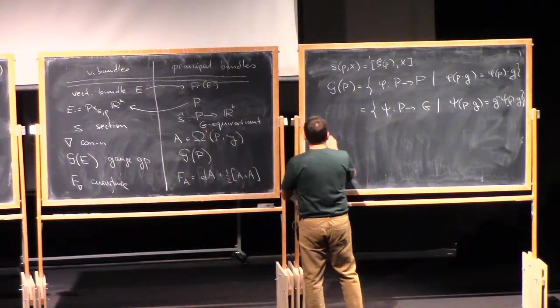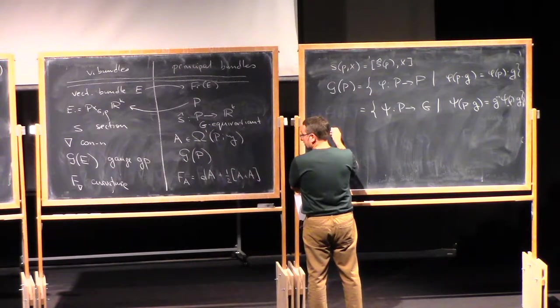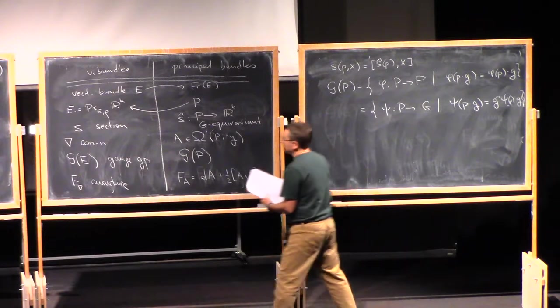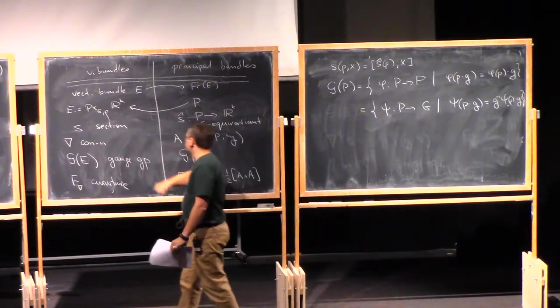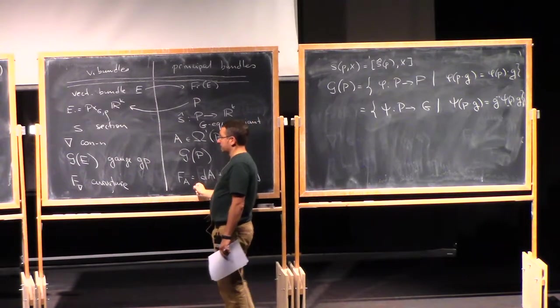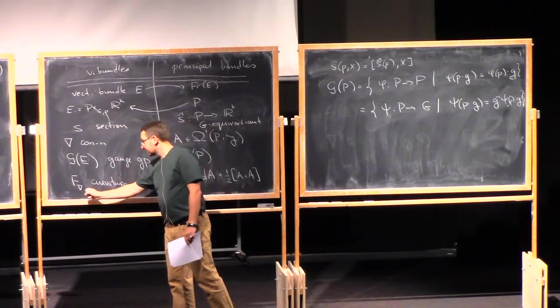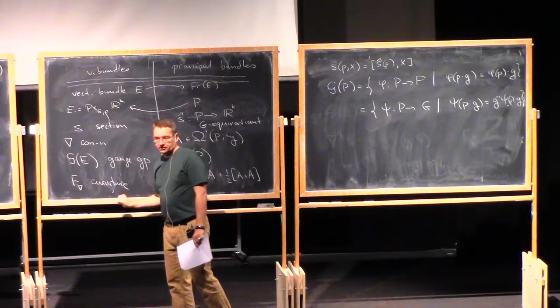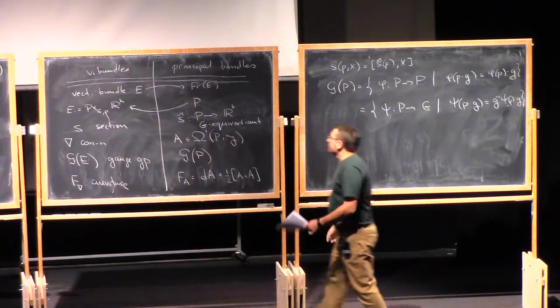So now F_A becomes dA plus one-half A wedge A. Where here, the brackets together with wedge means simultaneous brackets in the Lie algebra and taking the wedge product in the space of one forms. And so what you have is that these notions are related, so if you have a connection nabla which induces you a connection A on the principal bundle, you take its curvature, and this is more or less the same as the curvature of this connection F_nabla.